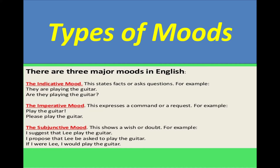The third is subjunctive mood. This shows a wish or doubt. For example: 'I suggest that Lee play the guitar.' In subjunctive mood, we follow a special rule.